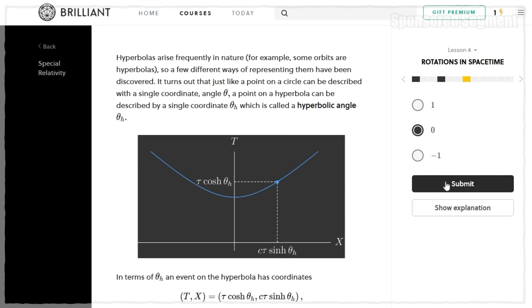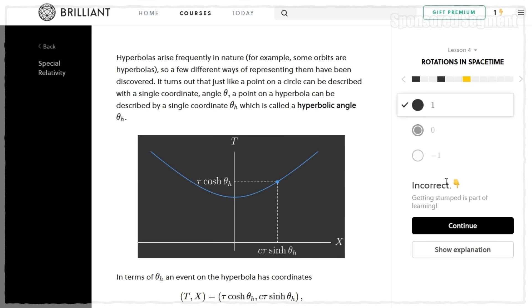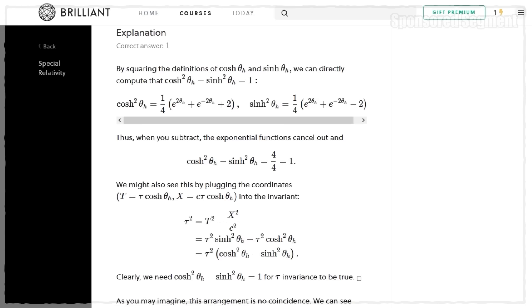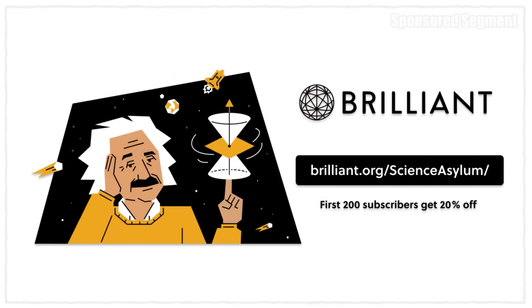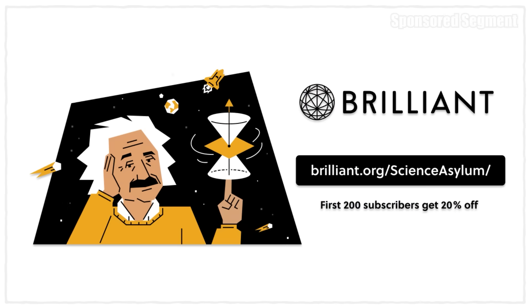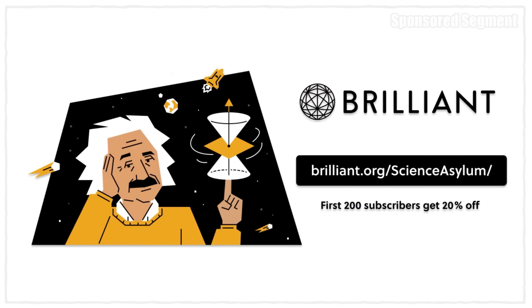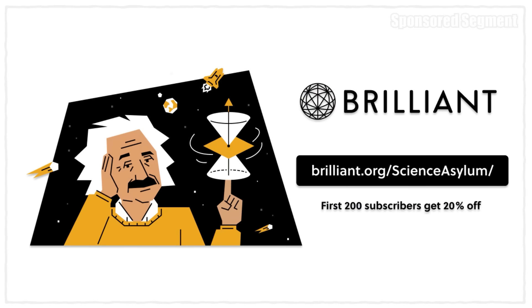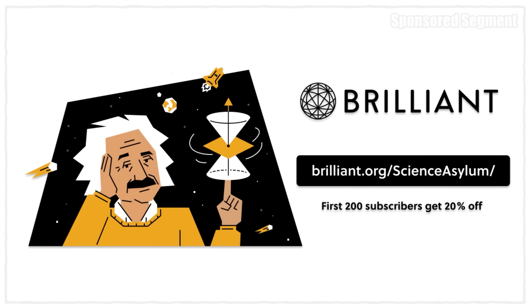If you feel stuck, it's no big deal. Brilliant provides in-depth explanations to break down the material even more. To get started with a free trial, go to brilliant.org slash Science Asylum or click the link in the description below. The first 200 of you will get 20% off Brilliant's annual premium subscription. It'll also let Brilliant know you heard about them from me, which helps out the channel.